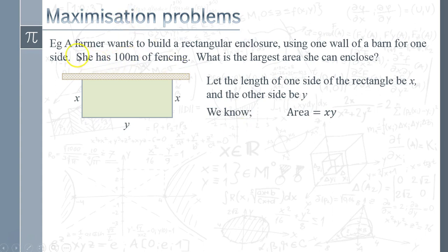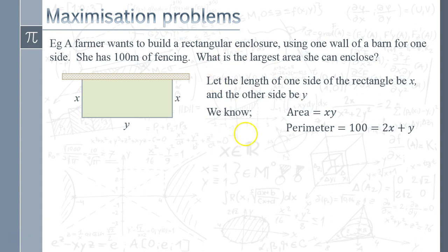We also have a constraint: we've got 100 meters of fencing, so we know the perimeter — which is 100 — equals 2x plus y. Because we've got two variables, we're going to need two equations. The vast majority of questions of this kind require you to set up two equations and then use one to replace one of the variables in the other, getting everything down to just one variable.